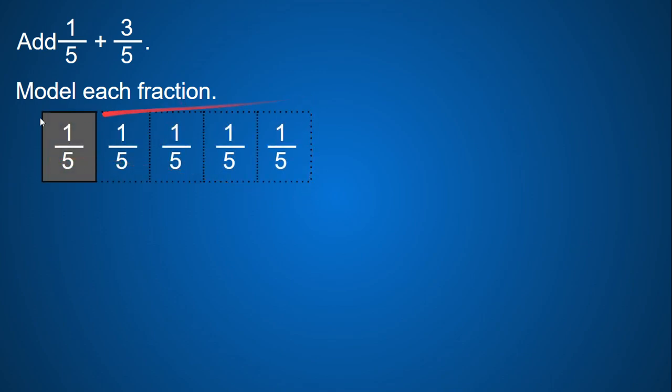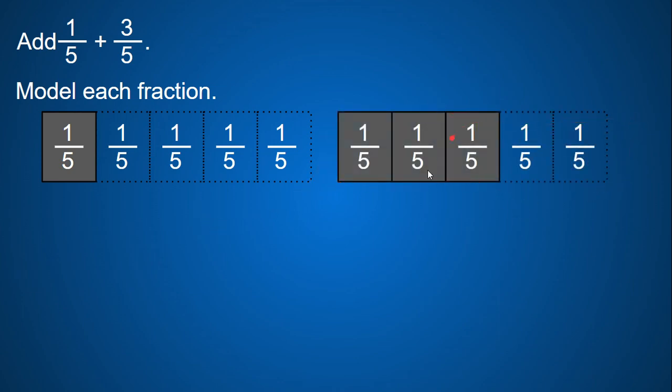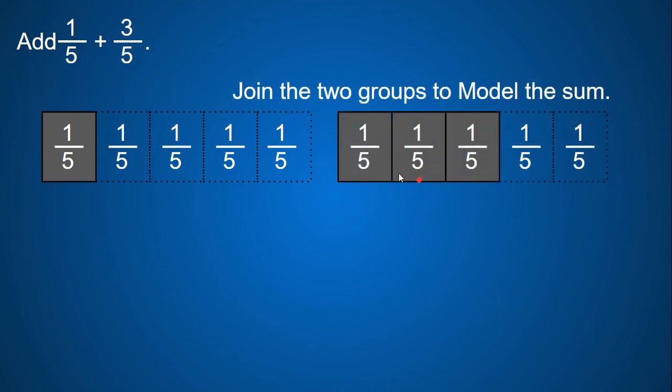So I have one-fifth modeled here, and here is three-fifths modeled. Then we will need to join these two models together to add them up.